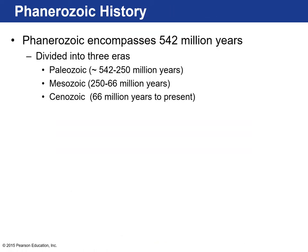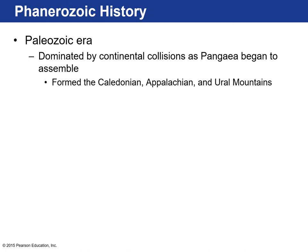Let's talk about the Phanerozoic history — the past 542 million years. We make a distinction here because this is when abundant multicellular organisms with hard parts start to show up. This is divided into three eras: the Paleozoic meaning 'old life' — 542 to 250 million years ago; the Mesozoic meaning 'middle life' — 250 to 66 million years ago; and the Cenozoic meaning 'recent life' — 66 million years to present. The Paleozoic was dominated by mountain-making through continental collisions when Pangea first assembled.